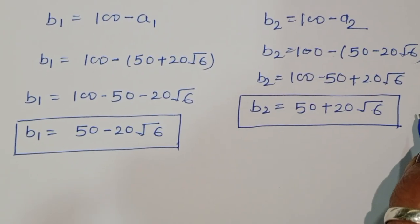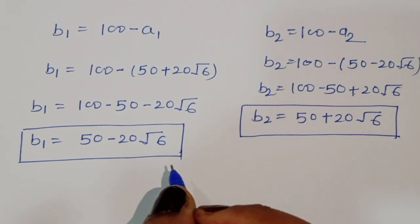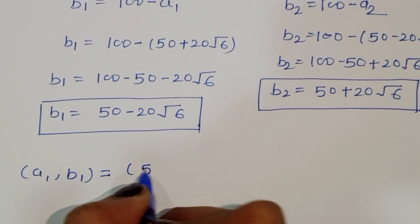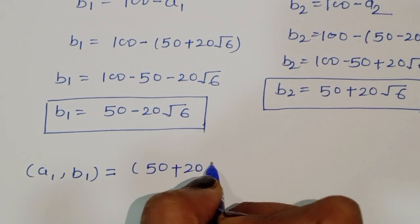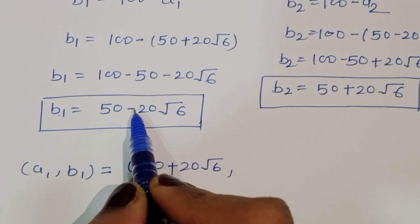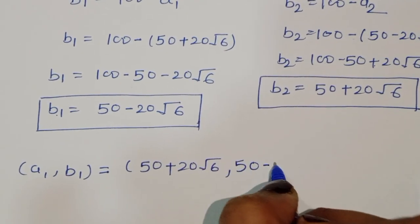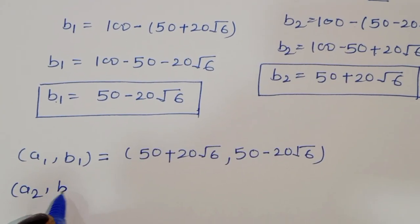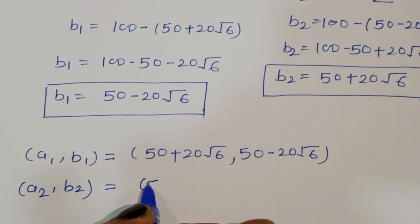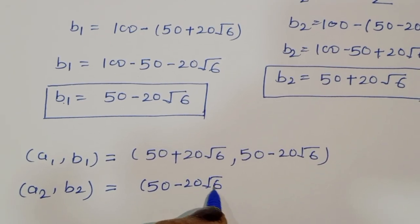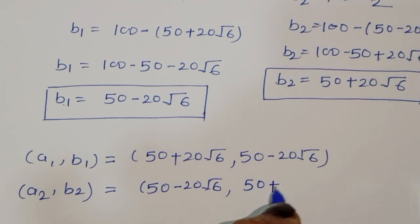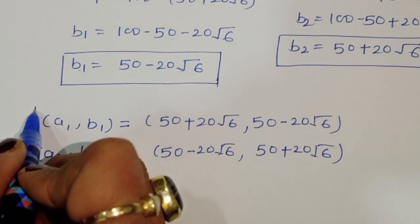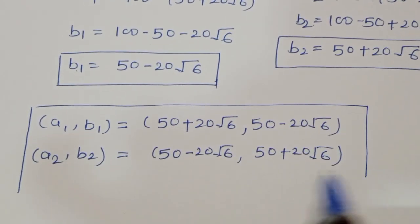So we have both solution pairs. When a1 equals 50 plus 20 square root of 6, then b1 equals 50 minus 20 square root of 6. And when a2 equals 50 minus 20 square root of 6, then b2 equals 50 plus 20 square root of 6. Now let's verify whether this is correct.